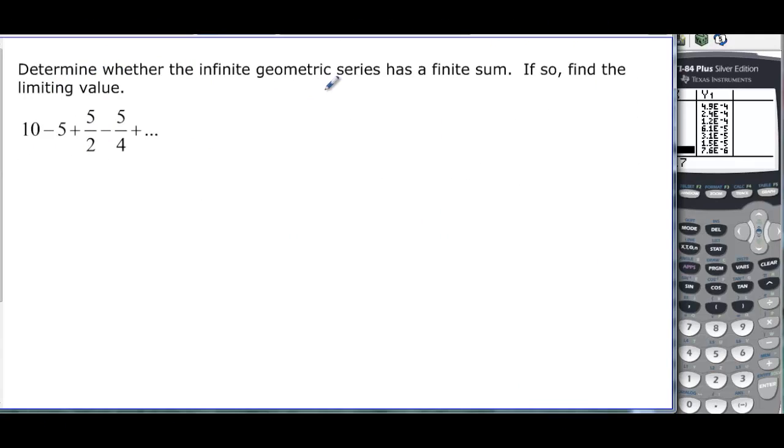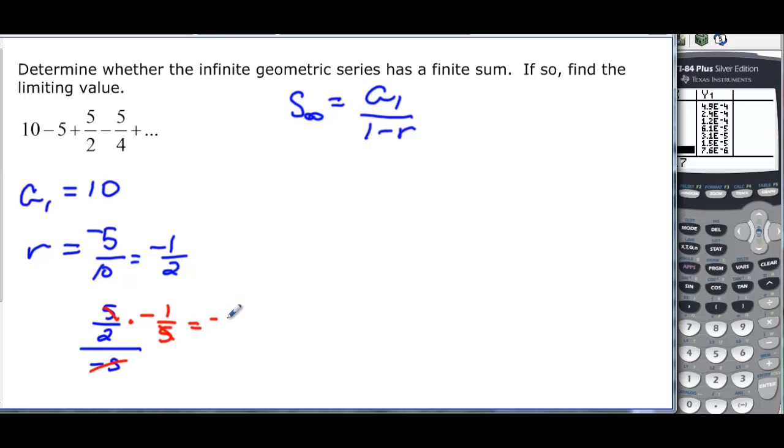So we're looking at this one, and it says determine whether it has a finite sum. And if it does, find the limiting value. That's what does it tend toward. Remember, it's s sub infinity is equal to a sub 1 over 1 minus r. A sub 1 is equal to 10. And let's figure out what our r is. It looks like it might be negative 1 half. But let's double check. Negative 5 divided by 10, sure enough, that's negative 1 half. And just to double check it, if I have 5 halves divided by negative 5, remember you can multiply by the reciprocal. So negative 1 over 5. Now I have negative 1 half.